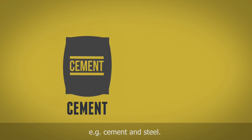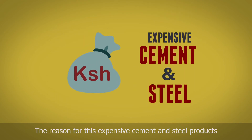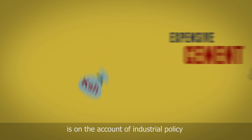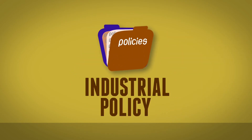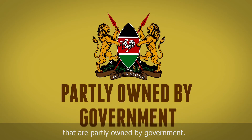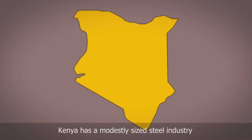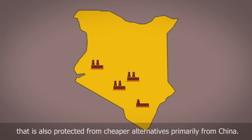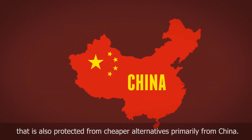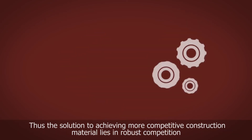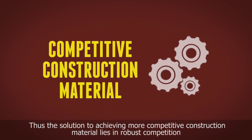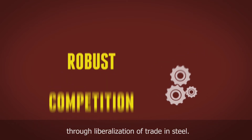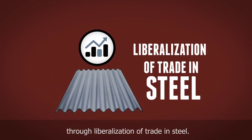The cost of materials such as cement and steel is high on account of industrial policy and the protection of cement firms that are partly owned by the government. Kenya has a modestly sized steel industry that is also protected from cheaper alternatives, primarily from China. Thus, the solution to achieve more competitive construction material lies in robust competition through liberalization of trade in steel.